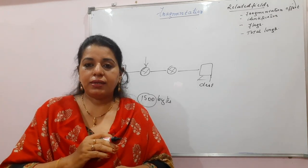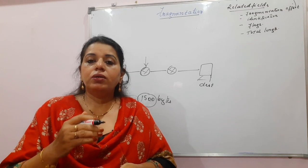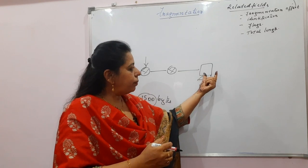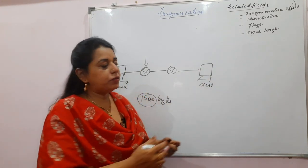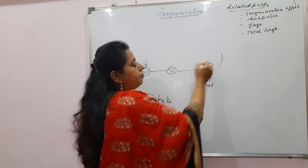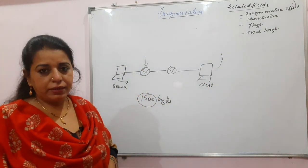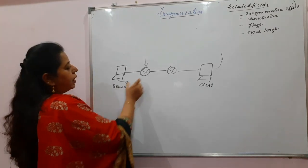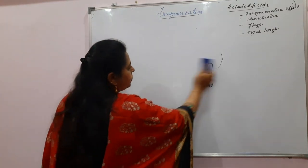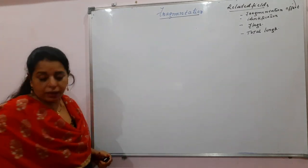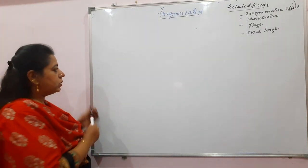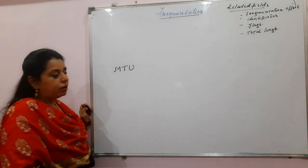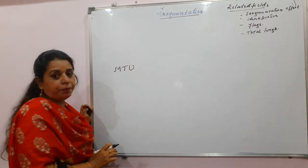At the destination, the fragments are arranged in order so they can be converted back to the original packet size and passed to the upper layer protocol at the receiver. The maximum size that a particular network accepts is called the Maximum Transfer Unit, or MTU.